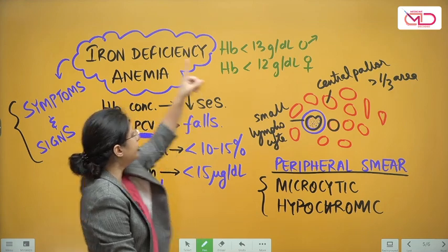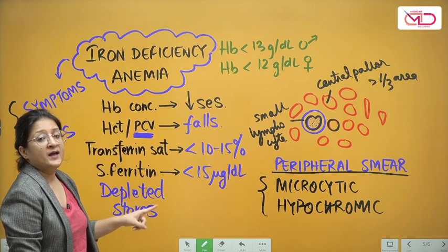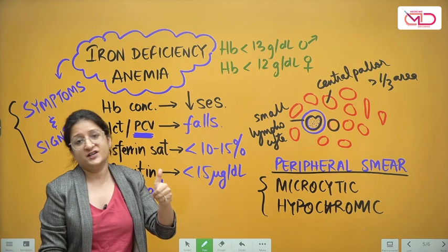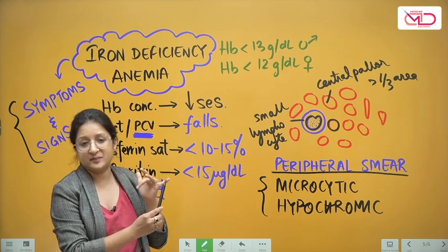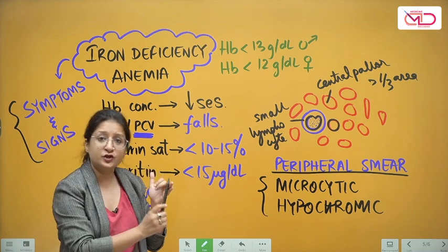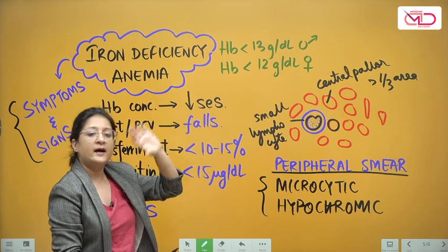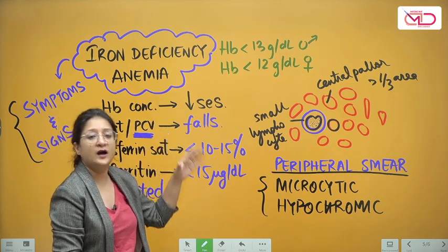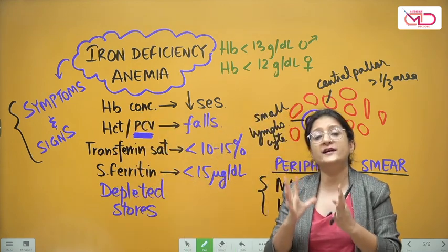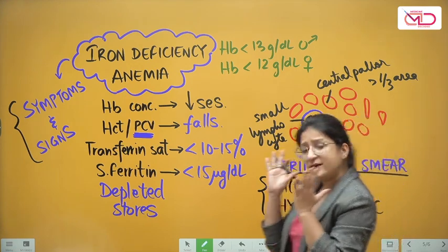This is the entire picture that evolves over time. Iron deficiency goes through three stages: first, negative iron balance; then iron deficient erythropoiesis; and finally frank iron deficiency anemia with signs, symptoms, and features enabling lab diagnosis. To diagnose iron deficiency, we consider signs and symptoms, check hemoglobin concentration, do a complete blood count, check RBC count and hematocrit.